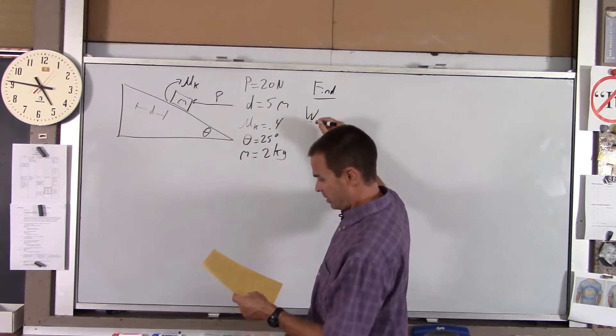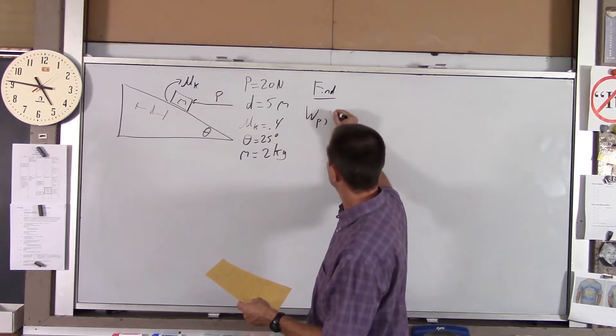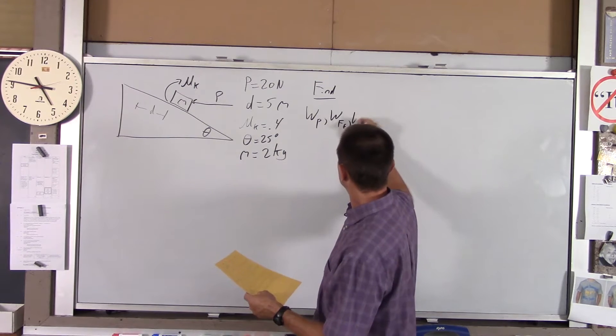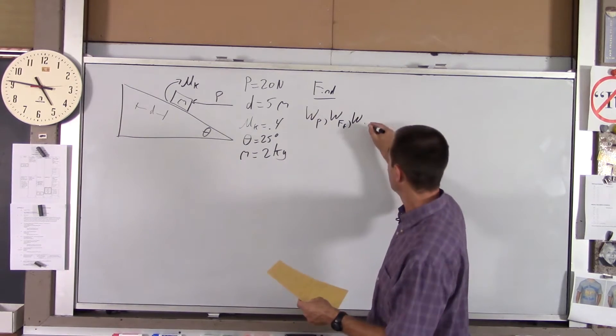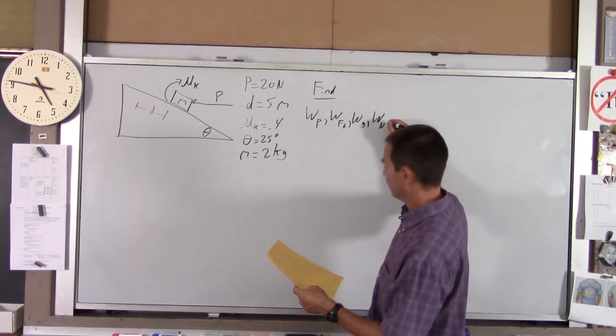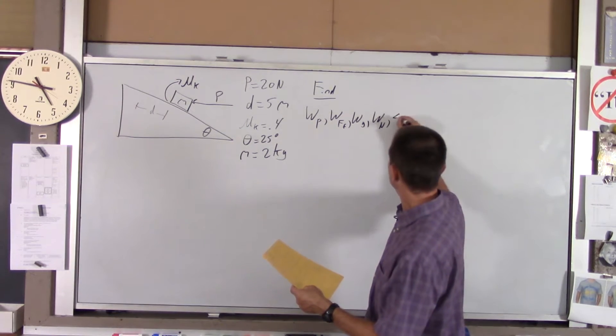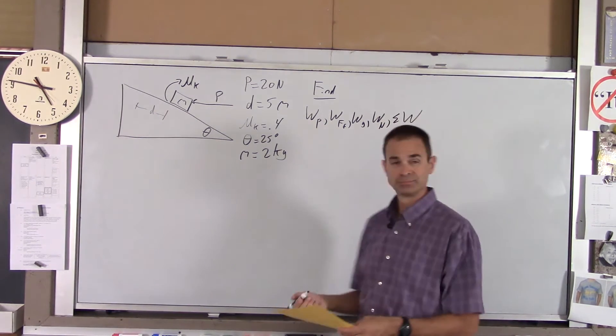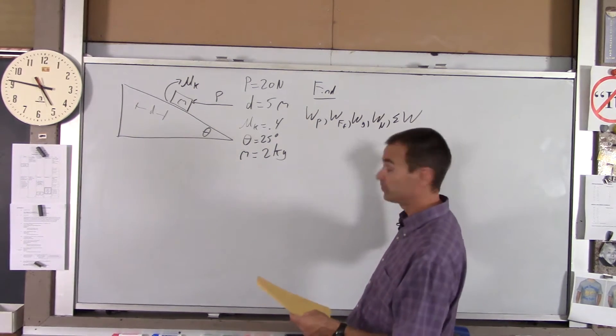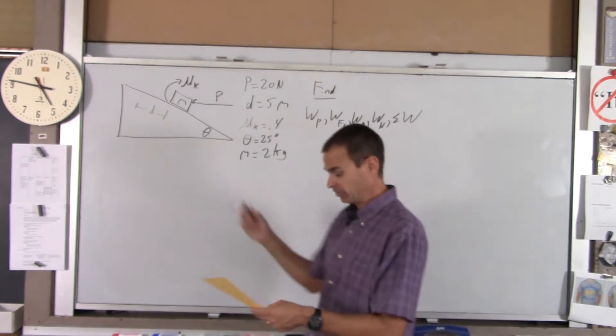Work done by the push force, work done by the force of friction, the work done by gravity, the work done by the normal force, and then the net work. So we're going to find the work done by all four of the forces acting on the object and then also the net work. That's our goal.